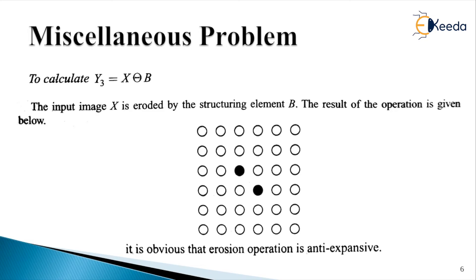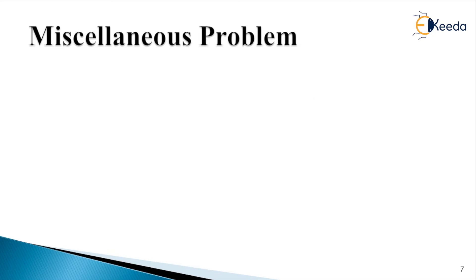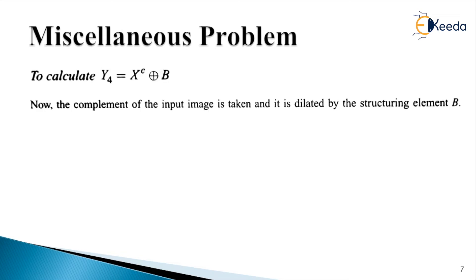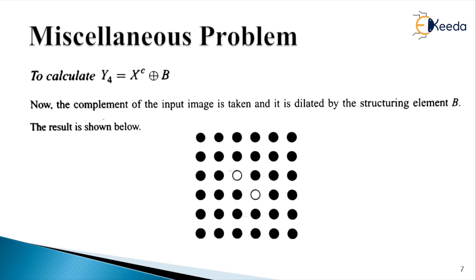For part five, we calculate Y4 as the image which is the dilated version of the complement of X by structuring element B. The complement of X was found in part one, so we utilize that and perform the dilation by B. Here we find only two pixels with white color whereas all the remaining pixels are in dark color.